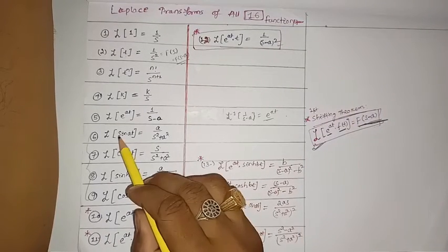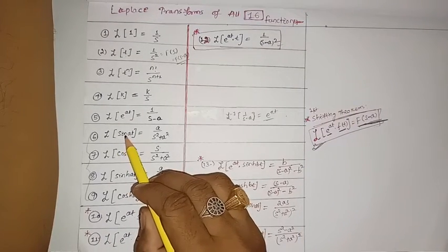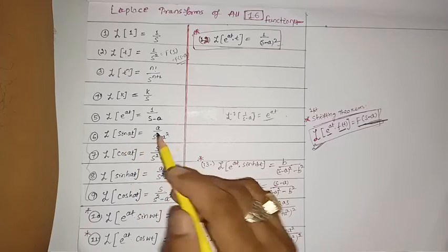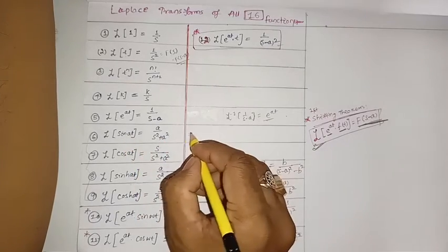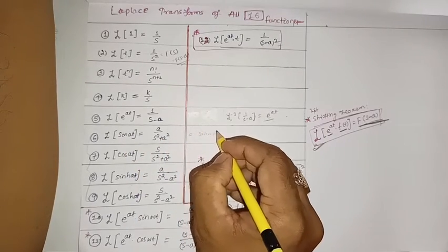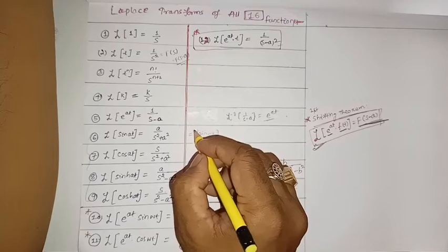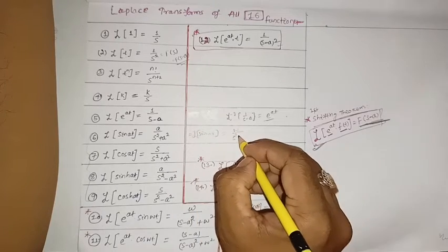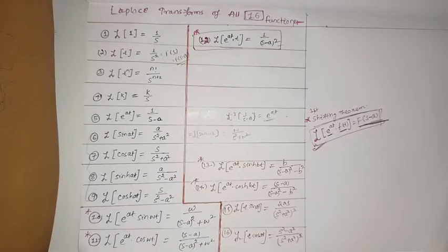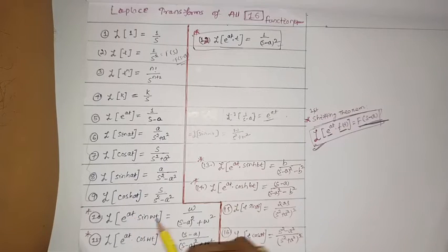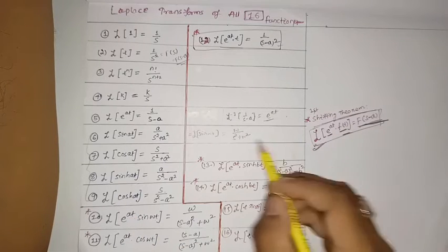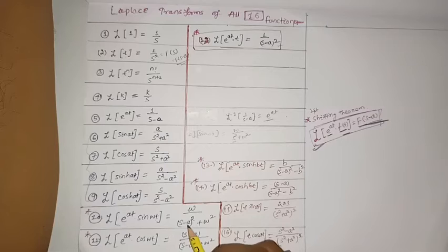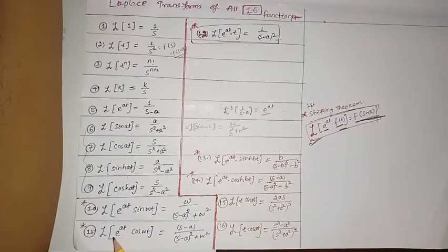For e^(at)·sin(ωt): the Laplace transform of sin(ωt) is ω/(s²+ω²). According to the shifting theorem, when multiplied by e^(at), instead of s we write s-a, giving ω/((s-a)²+ω²).